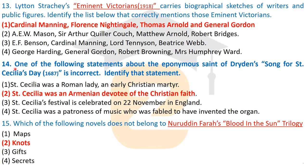Question fourteen: which statement about the eponymous saint of Dryden's 'Song for St. Cecilia's Day,' published in 1687, is incorrect? The correct answer identifies the incorrect statement as: 'St. Cecilia was an Armenian devotee of the Christian faith' — this statement is incorrect. All other options regarding this work are correct.